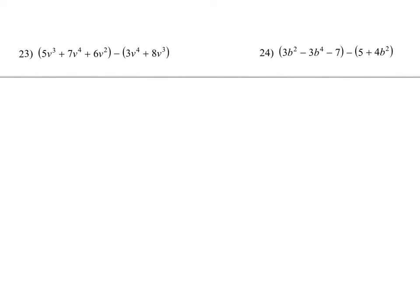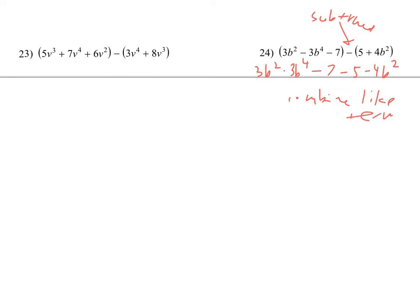Next, they want us to simplify, but now we have subtraction — not multiplication. We need to distribute that negative. I'll keep the first polynomial the same, then distribute the negative and combine like terms. We have negative 3b to the fourth with no like term. Then negative 4b squared and positive 3b squared give negative b squared. And negative 7 and negative 5 give negative 12.